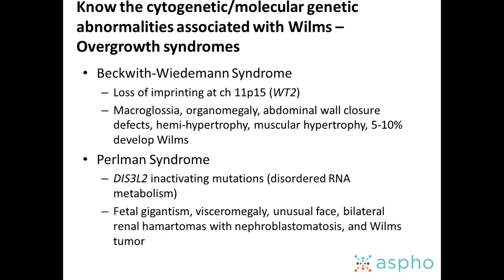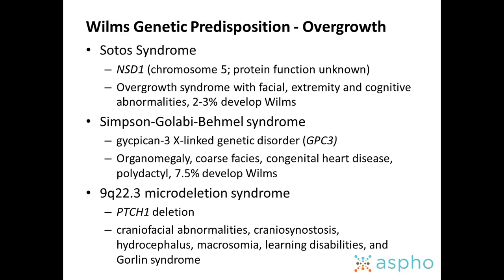For cytogenetic and molecular genetic abnormalities in Wilms tumor, I divide germline aberrations into overgrowth syndromes and non-overgrowth syndromes. Among overgrowth syndromes, Beckwith-Wiedemann syndrome involves loss of imprinting at the WT2 gene — these children have macroglossia, organomegaly, abdominal wall closure defects, hemihypertrophy, and muscular hypertrophy, with 5% to 10% developing Wilms tumor. Perlman syndrome involves fetal gigantism, visceral megaly, coarse facies, bilateral renal hamartomas, and nephroblastomatosis, and can also develop Wilms tumors. Many more syndromes are listed in the handout for your review.